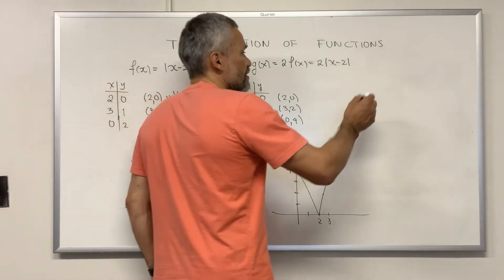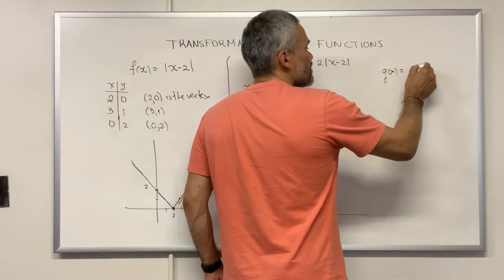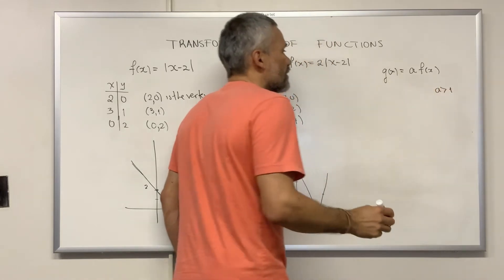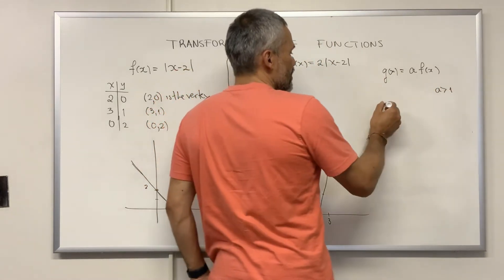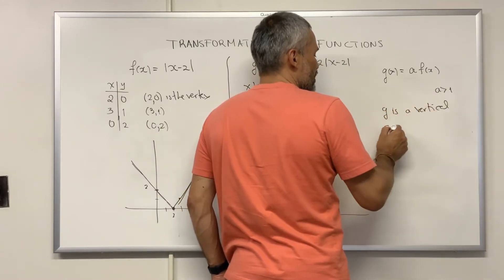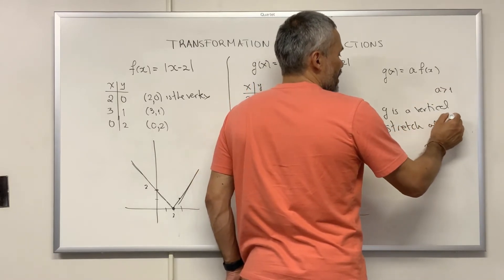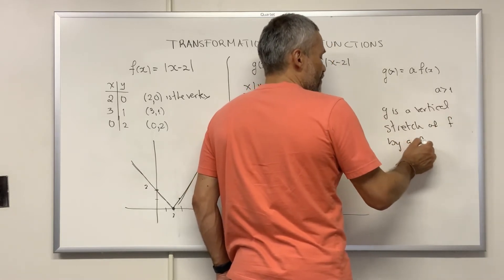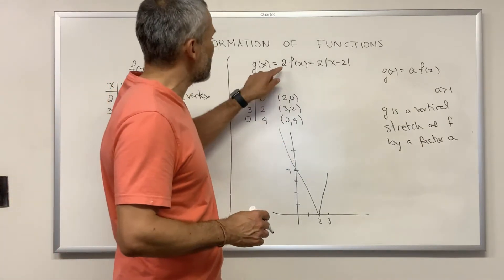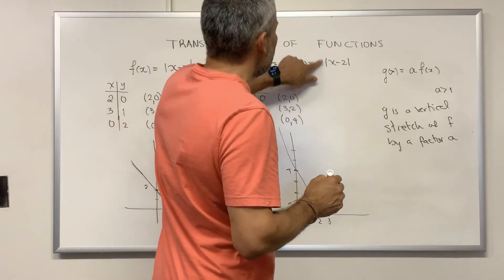This happens in general: if we have a function g of x defined as a times f of x with a greater than 1, then the new graph of g is a vertical stretch of f by a factor of a. Let's see what happens when we consider an a that is positive but smaller than 1.